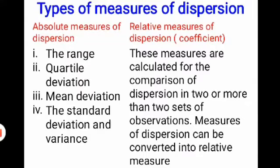Then we want to discuss about types of measures of dispersion. There are two types: first, absolute measures of dispersion, and second, relative measures of dispersion, which means coefficient, which measures the comparison of dispersion. There are four types of absolute measures of dispersion: the range, quartile deviation, mean deviation, and standard deviation and variance.